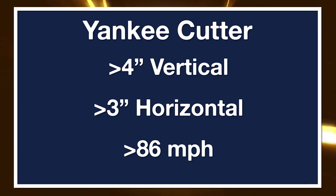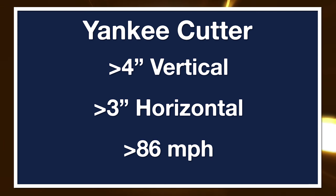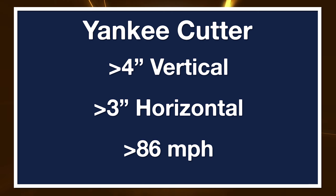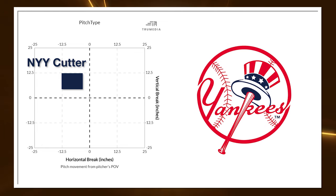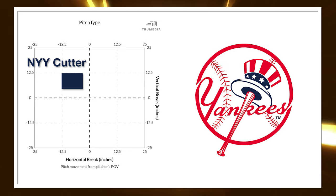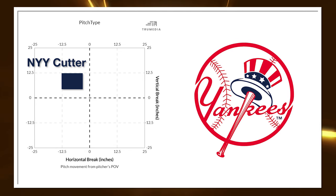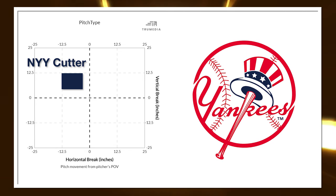I asked an MLB source of mine for an answer to the following question: which organization, from A ball to AAA — which encompasses four levels — throws the most pitches tagged as either sliders or cutters that fit into the following box: greater than four inches of induced vertical break, greater than three inches of sweep, and thrown above 86 miles per hour. That encompasses here on our pitch plot in that Yankee cutter territory, as long as the pitch is above 86 miles per hour.